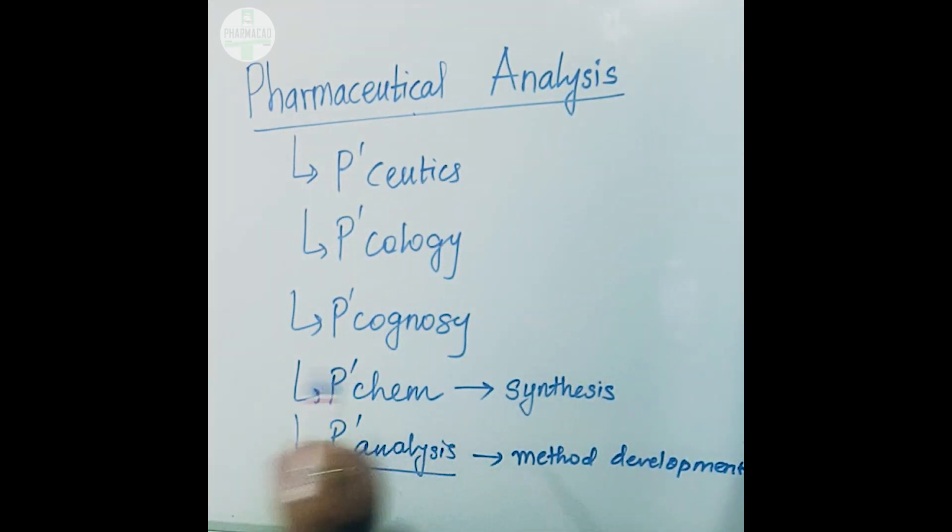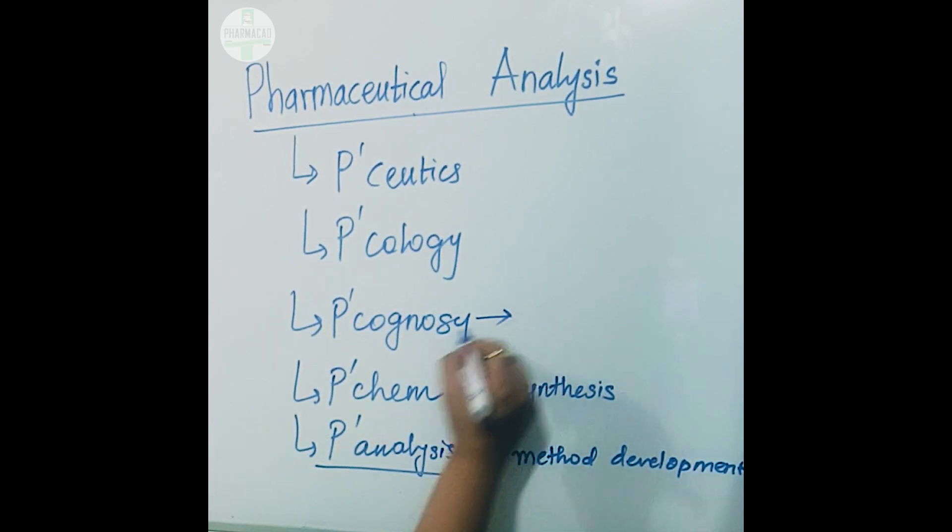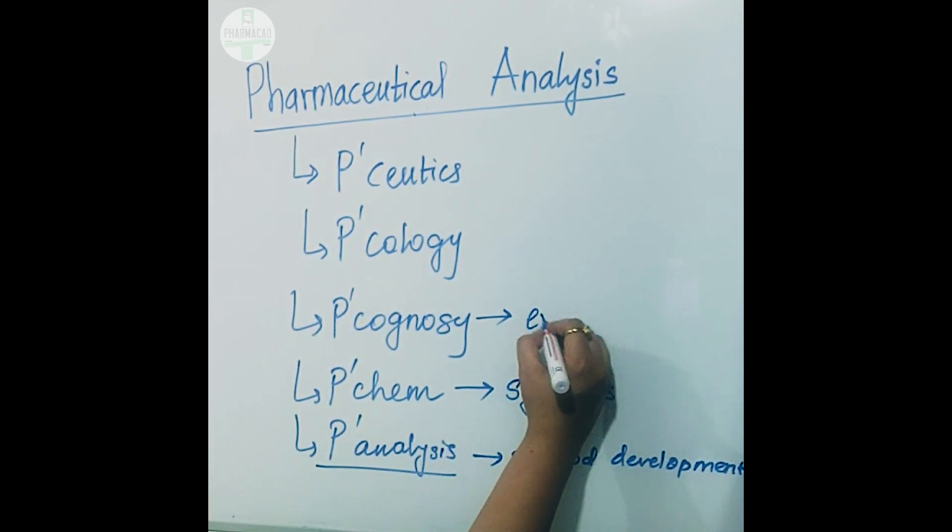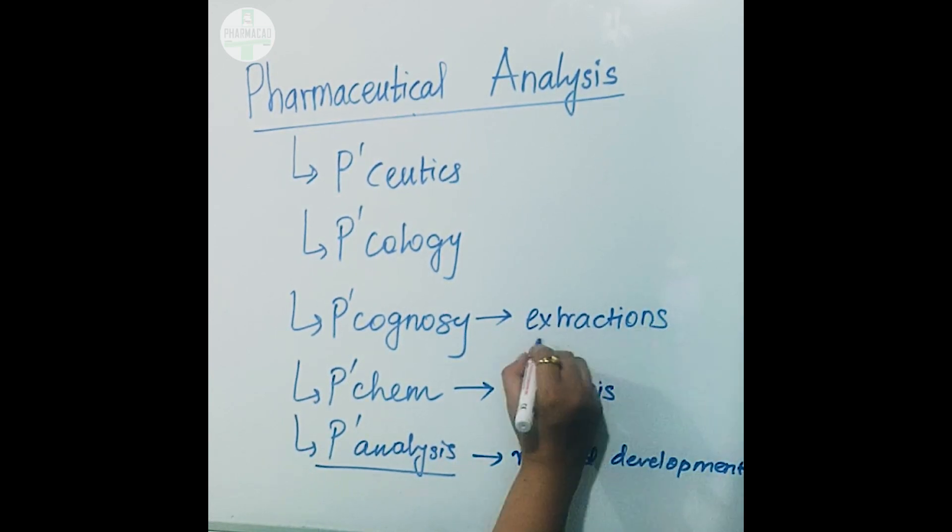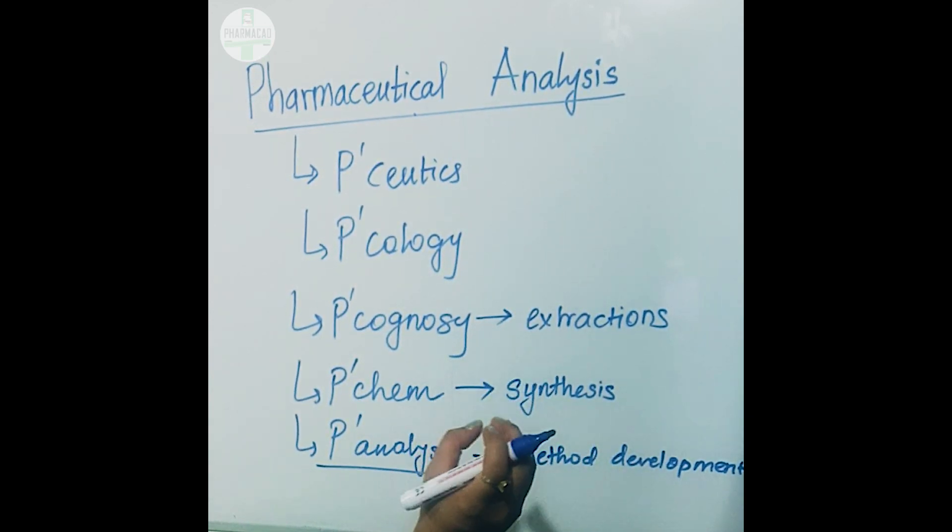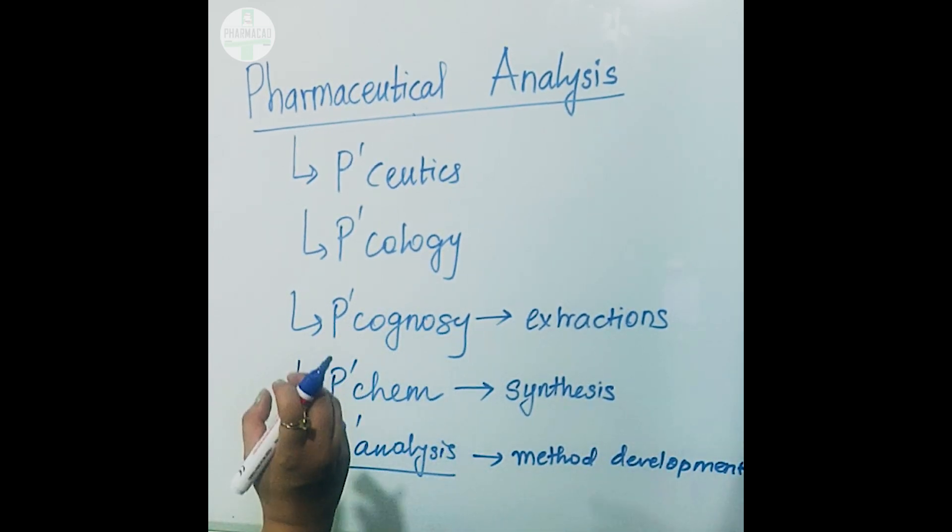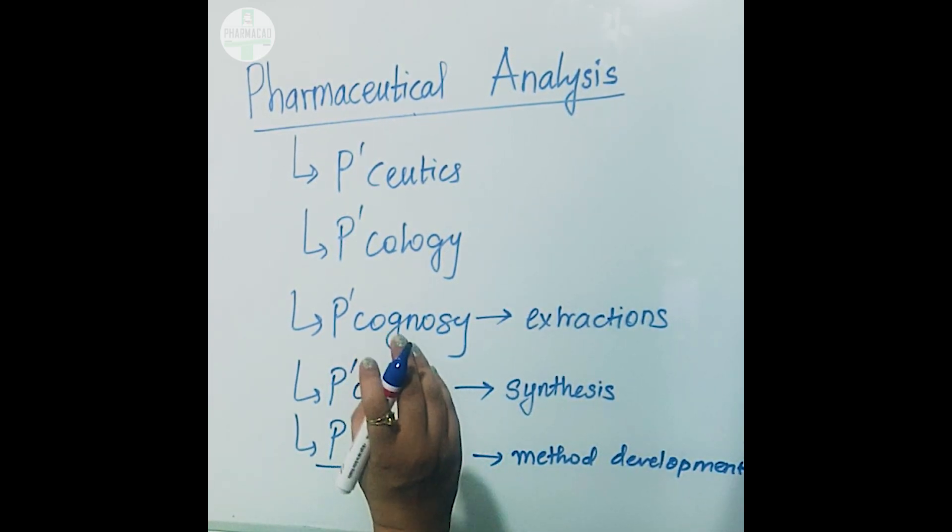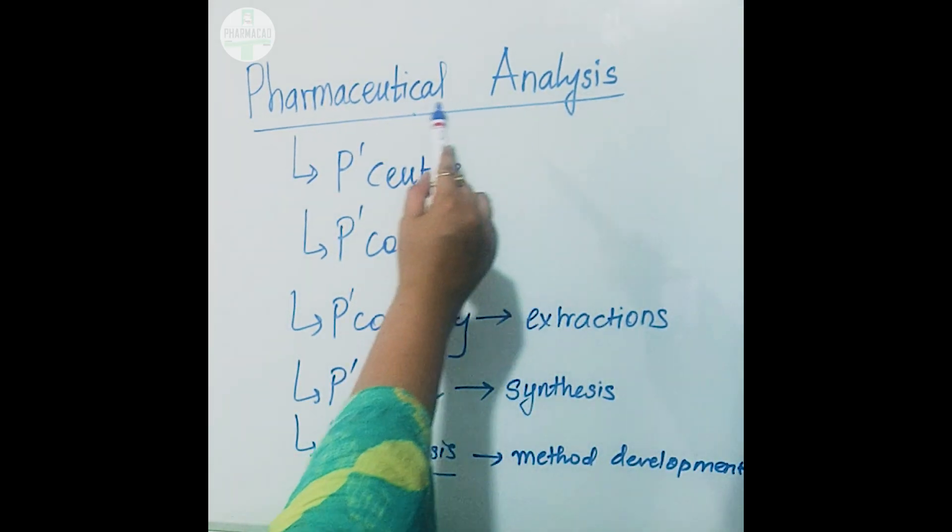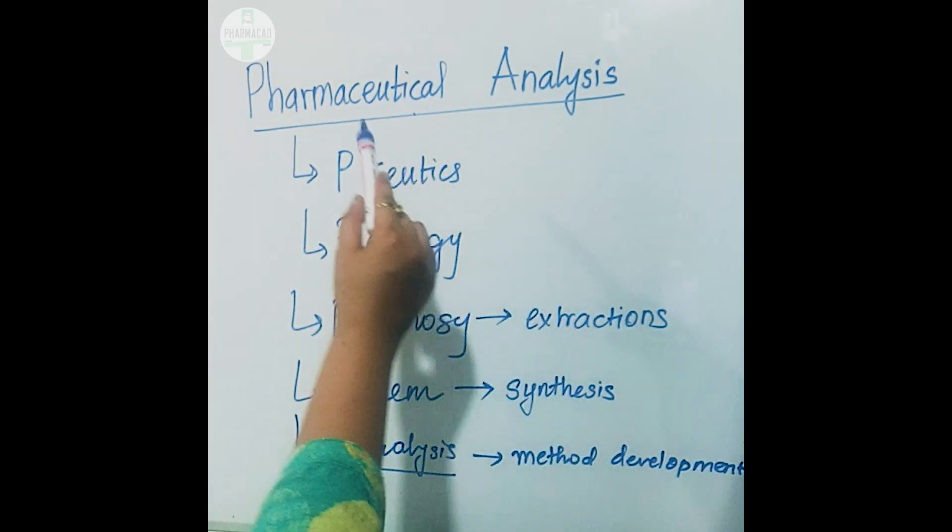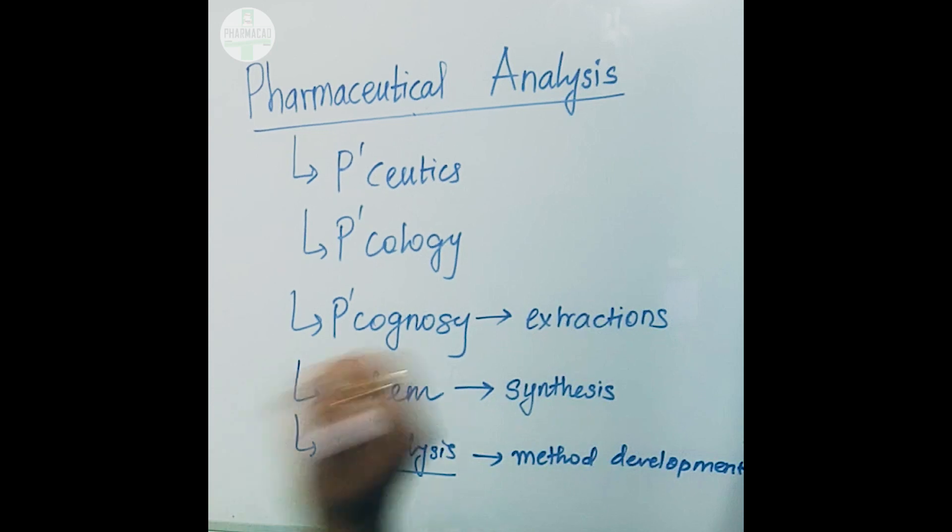If you are doing pharmacognosy, what you do is mainly extractions. In such a project, you extract a constituent from herbal plant product. Example, you extract a constituent from a bark. On extraction, you have to prove what you have extracted in which you will have to analyze or identify that extracted constituent. Hence again, pharmaceutical analysis is important for pharmacognosy project.